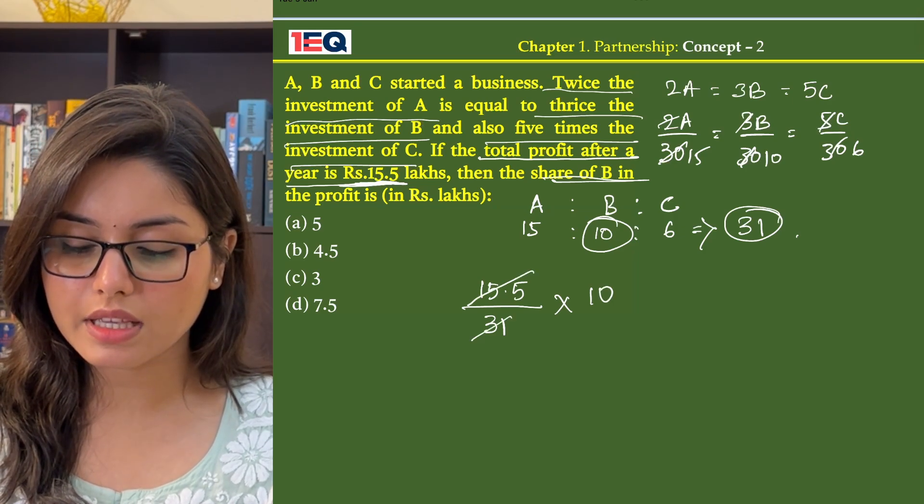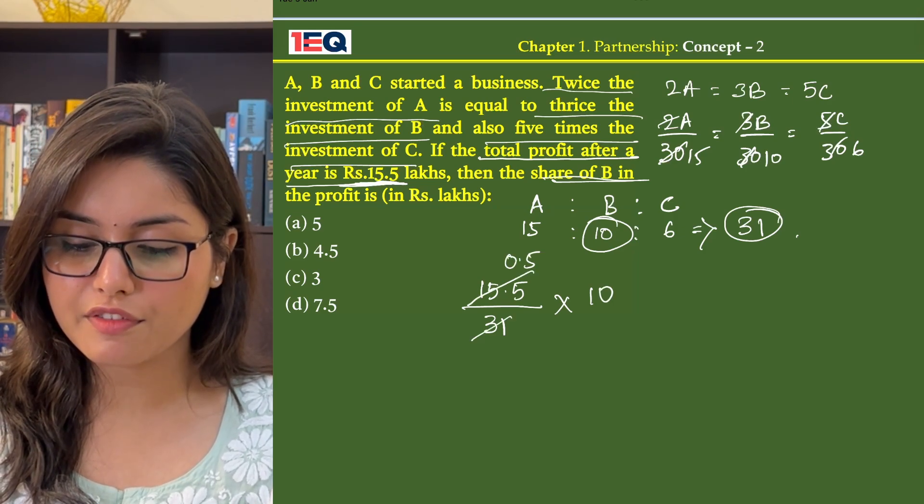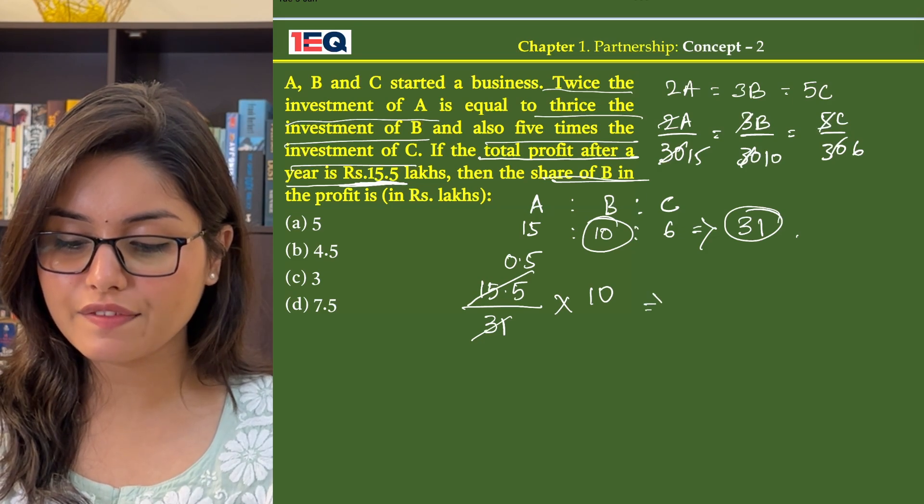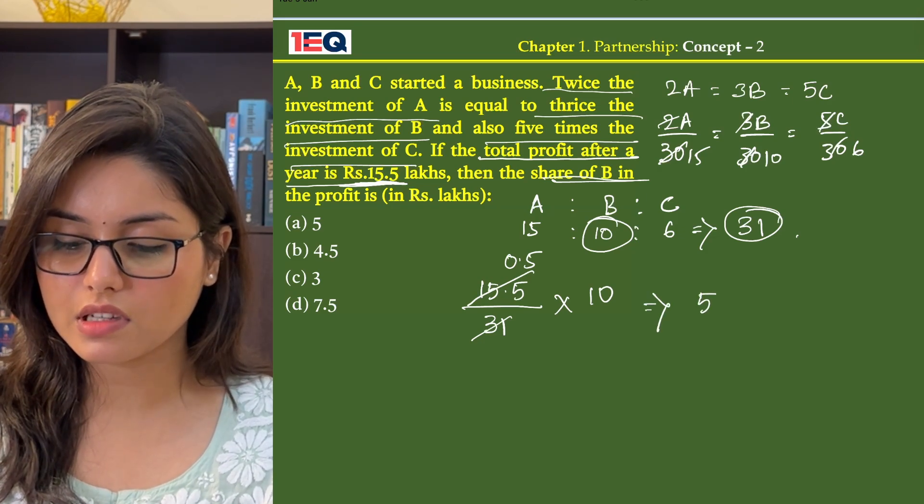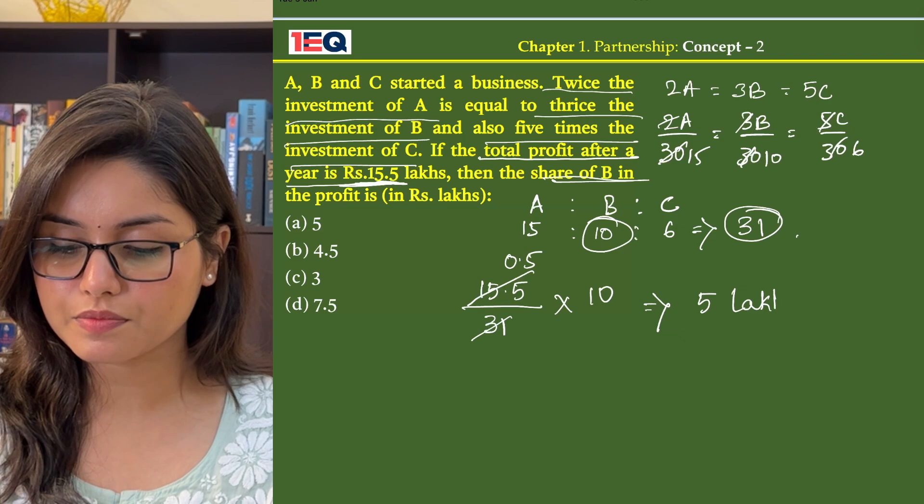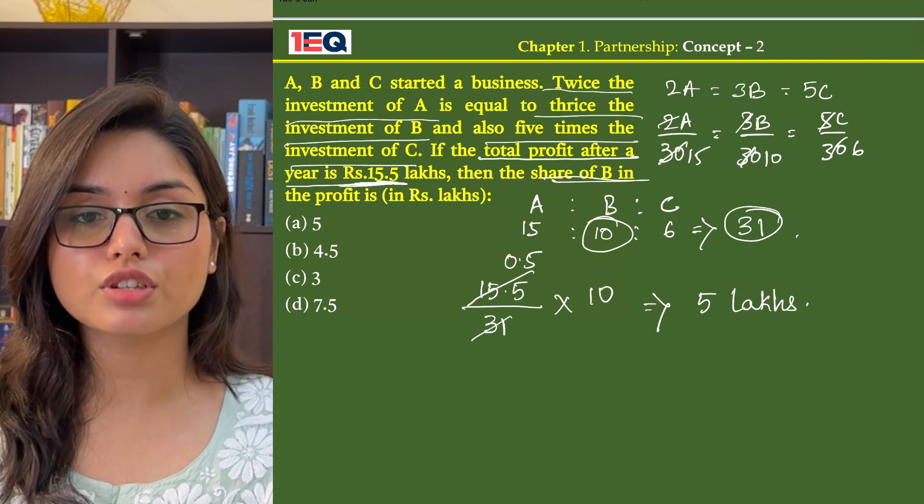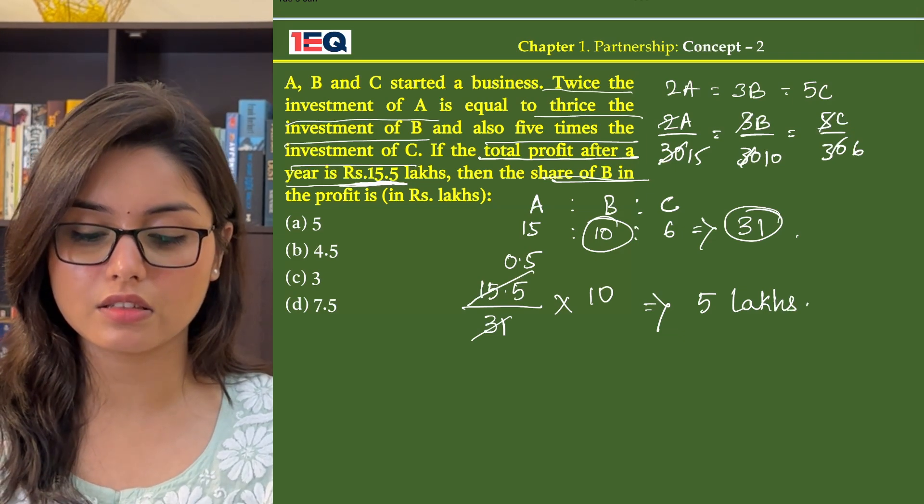On dividing we get 0.5. Now 0.5 into 10 is equal to 5. That means 5 lakhs. So B's share is equal to 5 lakhs, that is option A.